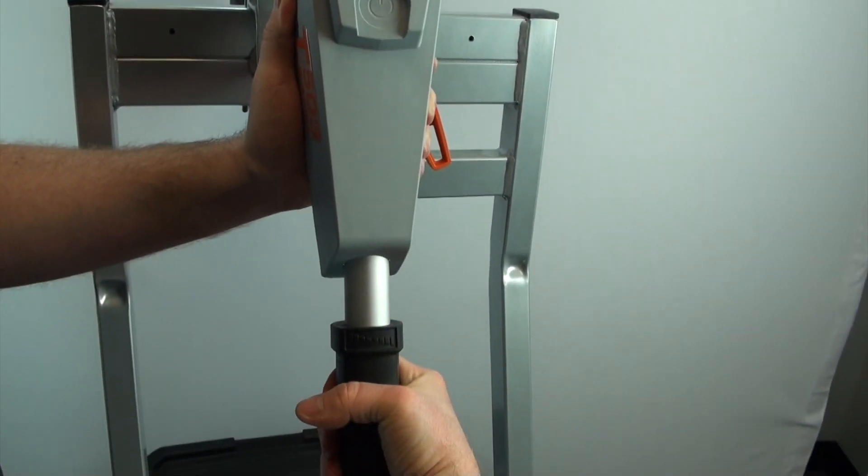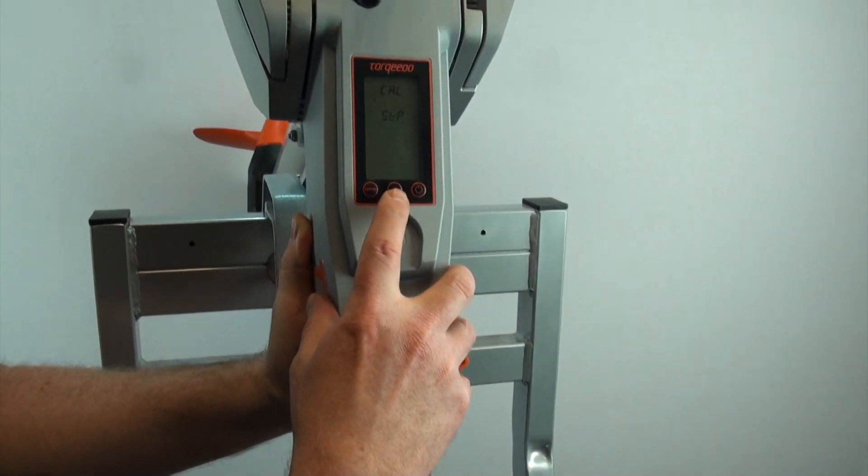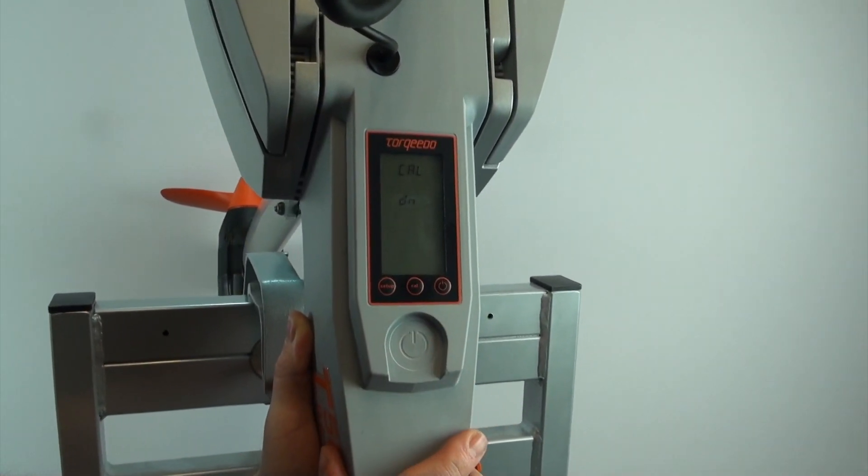Rotate your handle to the neutral position or stop position. Press CAL, and then CAL down.